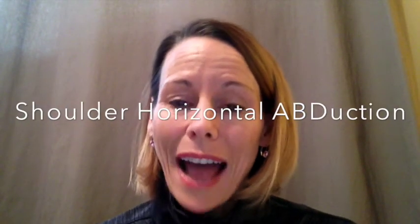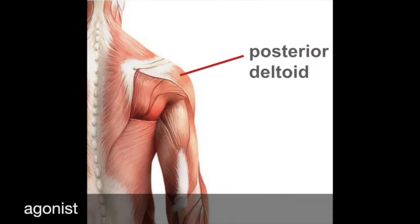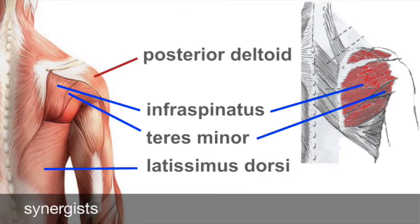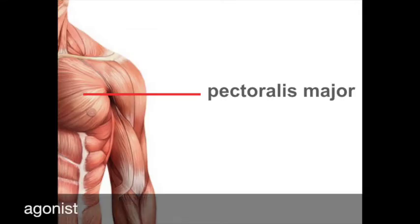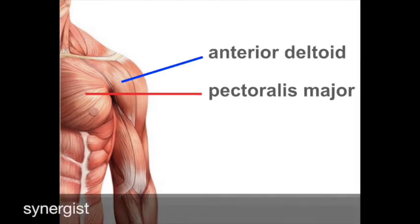This next pair of movements is a bit tricky because you have to start out of anatomical position. We're going to start with the shoulders flexed. Shoulder horizontal abduction: the arm moves away from the midline along a horizontal plane. The agonist is the posterior deltoid, or back head of the deltoid. Synergists are the infraspinatus, teres minor, and latissimus dorsi. Shoulder horizontal adduction is the opposite — the arm moves in toward the midline along a horizontal plane. The agonist is the pectoralis major, and the synergist is the anterior deltoid.